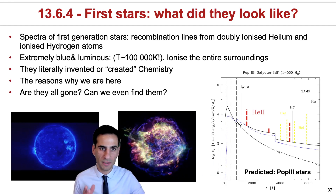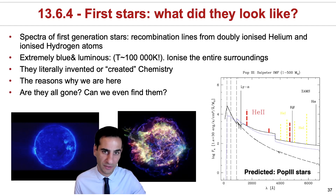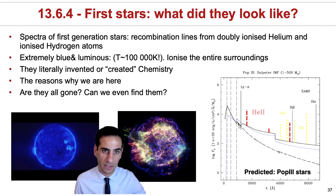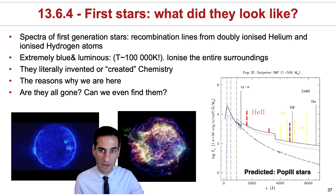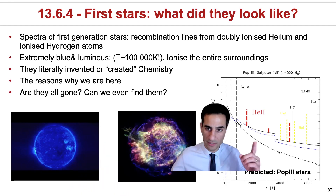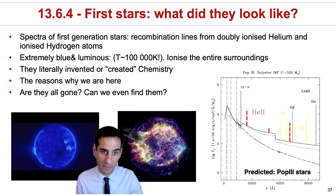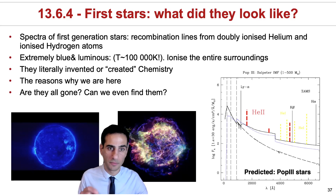Because these first-generation stars literally invented or created chemistry — they're sort of the reason why we're here — we definitely want to try to find them. They are very hard to find because with such large masses, at least those that would lead to these kinds of signatures, they should live for a very short amount of time, and therefore we need to be really lucky to actually find them.